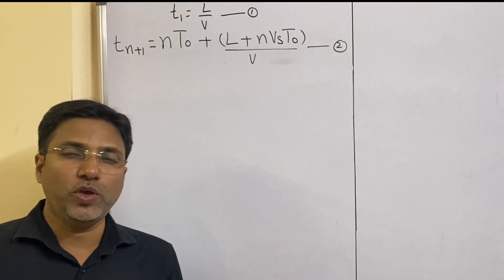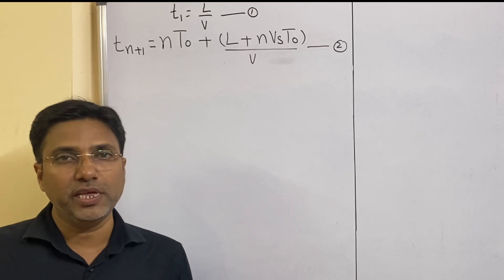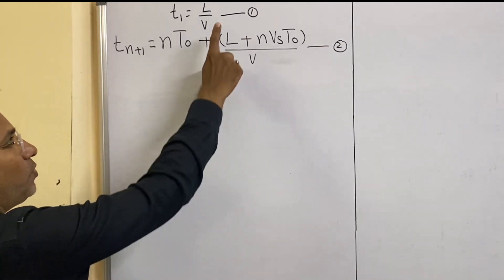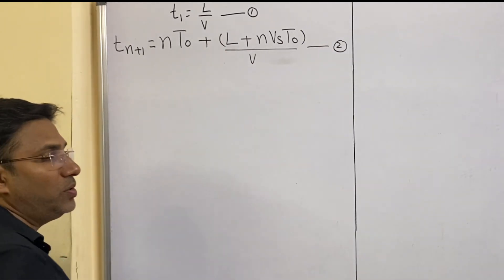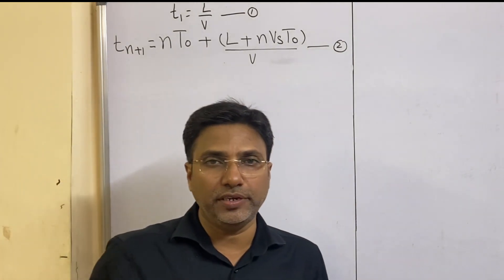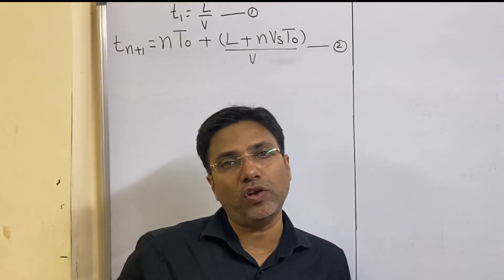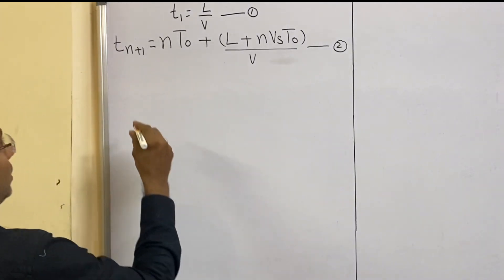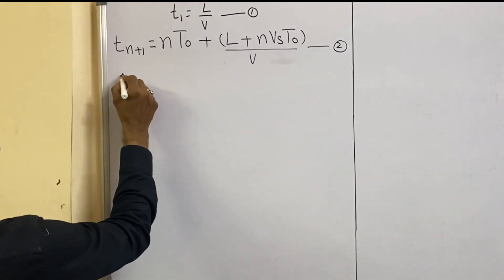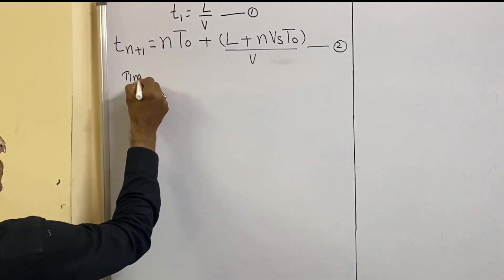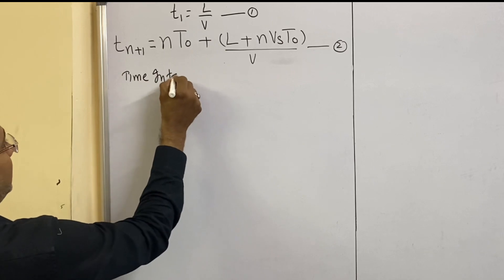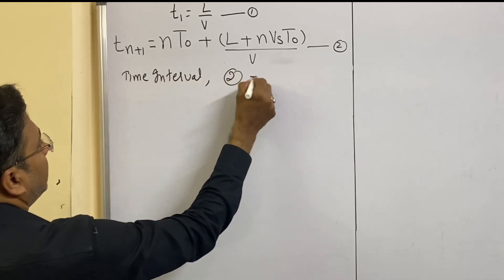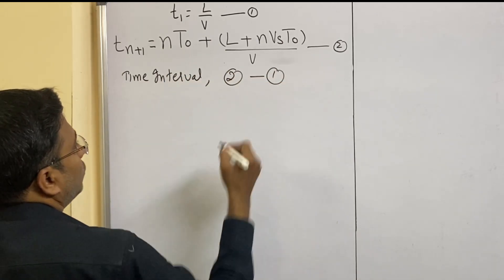Dear students, hope you have learned the diagram and those formulas. From those formulas only, we have written equation number 1 and equation number 2. Now we have to find the time interval. To find the time interval, we simply do equation 2 minus equation 1.